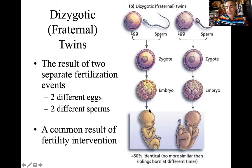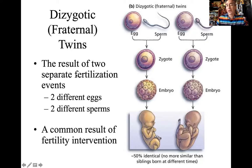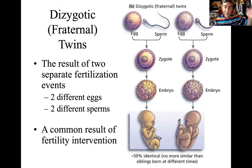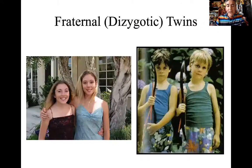In a dizygotic situation, you can have a male and a male, a male and a female, or two females — they're not clones of each other, not identical. Two separate eggs, two separate sperm, two separate fertilization events. This is very typical when mom is given fertility medication to help her ovulate multiple eggs, trying to increase the chances of fertilization happening. That will speed up the time she reaches menopause, but it increases the chance that she will produce a viable pregnancy.